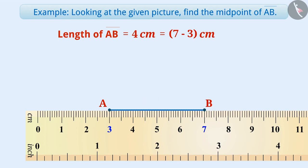The midpoint of AB will be that point which is at the same distance from A and B. To identify the midpoint, we need to divide 4 cm by 2. The result of this division is 2 cm.